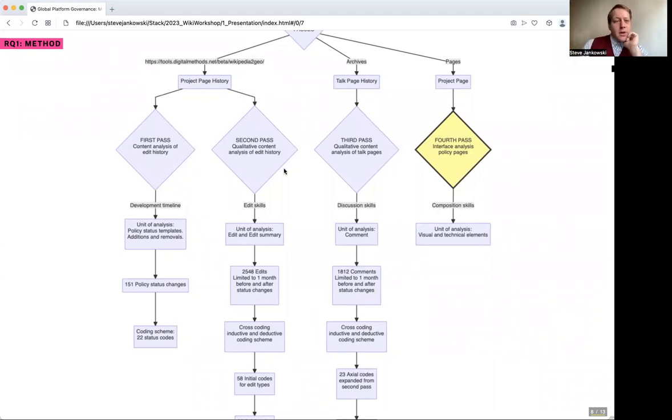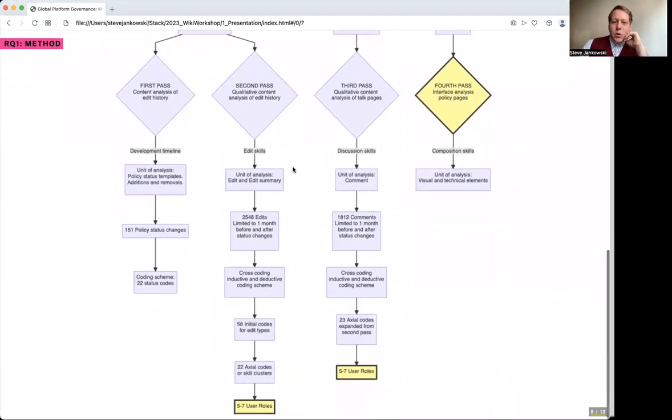Sometimes we had to change a few. The second pass is a qualitative content analysis of the edit history. We went through the edits of each of these policies, 2,548 edits in total, looking for particular kinds of skills and user roles. We did it again through the talk page to look for discussion, and we are currently working on looking at the way that composition plays an important role as a skill on Wikipedia policy development.